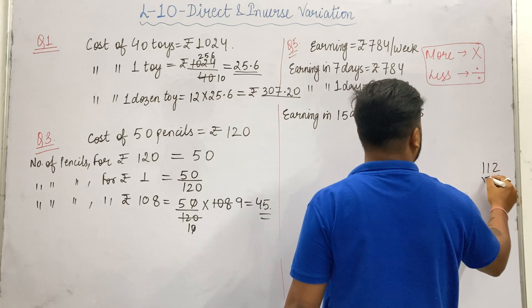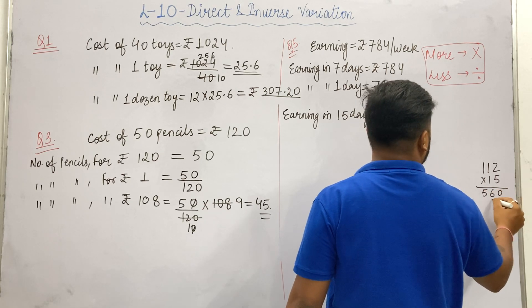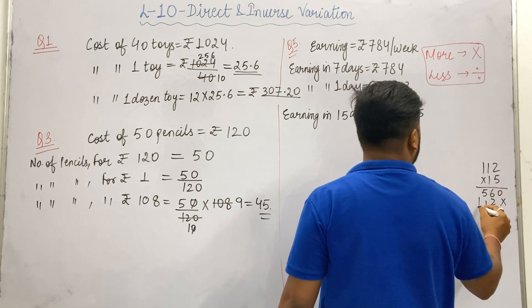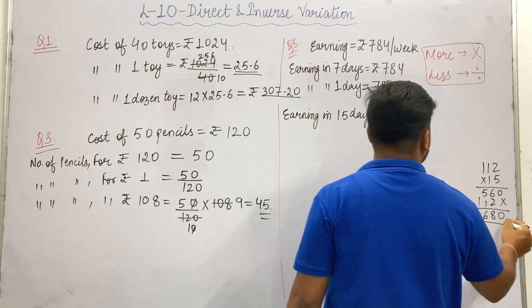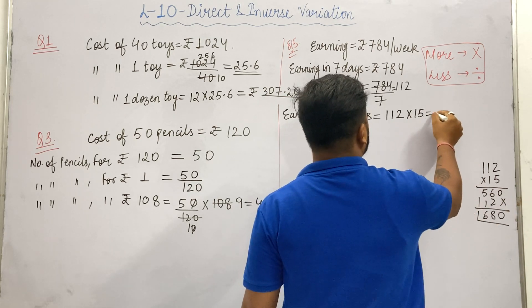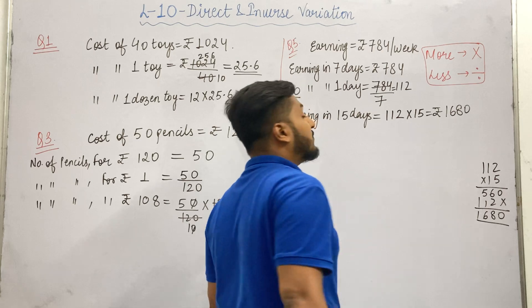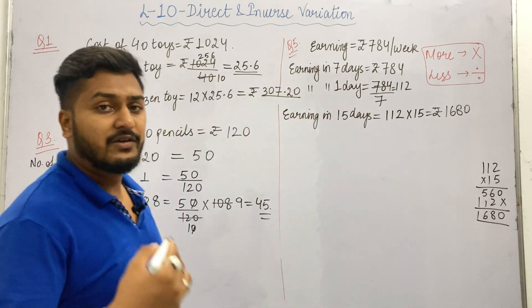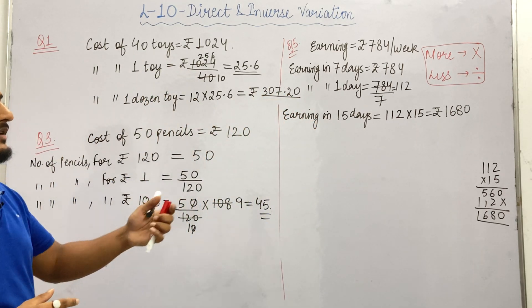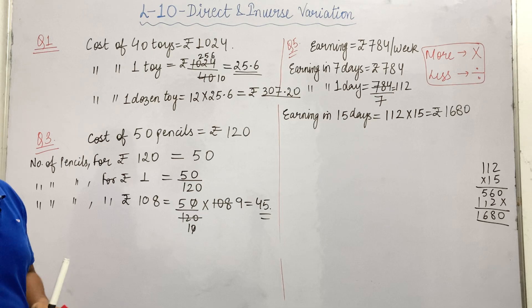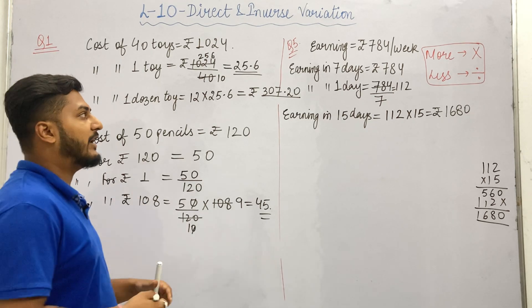Then we multiply by 15. So 15 multiplied by 112 equals 1680. Therefore the laborer will earn Rs. 1680 in 15 days. This was question number 5.